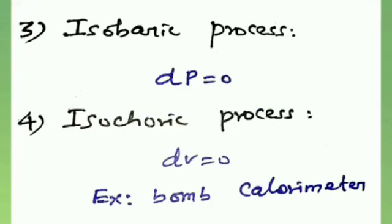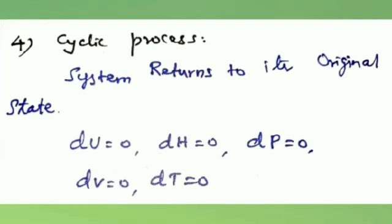Third one is isobaric process, where pressure is not equal to zero. Fourth one is isochoric process, where volume does not change. The volume of the system remains constant during its change from initial to final state. Combustion of fuel in a bomb calorimeter is an example of isochoric process.